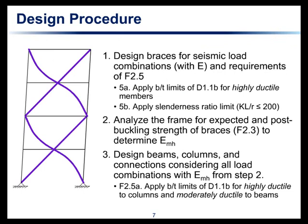The general design procedure for special concentrically braced frames is to first design the braces for the seismic load combinations and the additional requirements of Chapter F. Section F2 covers special concentrically braced frames and puts limits on the B over T ratio and the slenderness ratio for braces. These are the typical design forces from ASCE 7 that include E that we're going to design for — nothing special there.